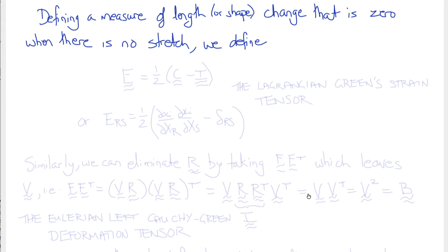This gives us E equals one-half of C minus I, which is known as the Lagrangian Green's strain tensor. In component notation, its components are ∂xi/∂Xr ∂xi/∂Xs minus δrs.